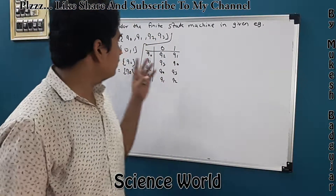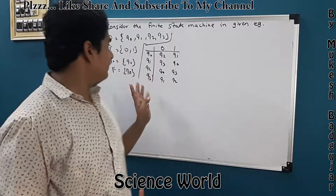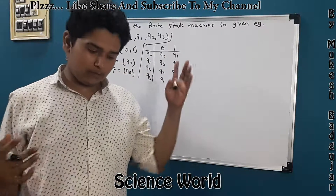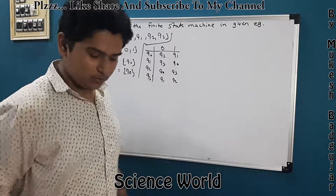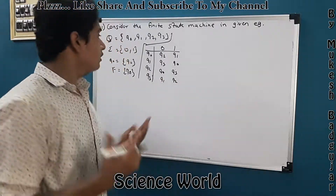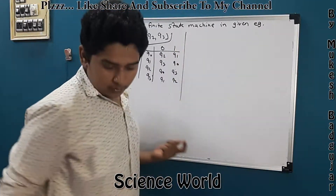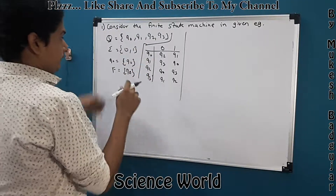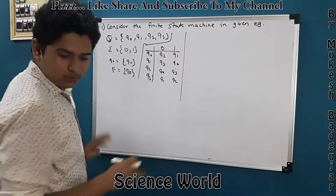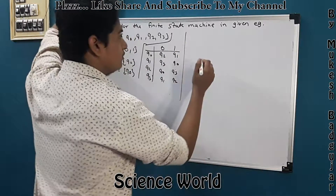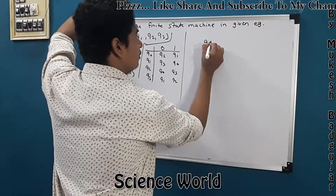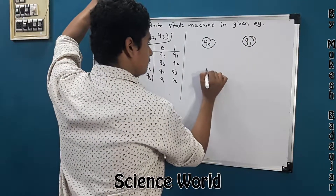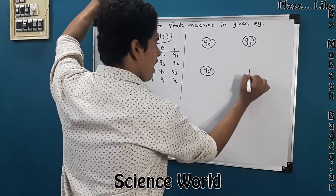Now we have to solve the example using the table, and from that we will find and draw our diagram. We have four states, so we directly define four states: Q0, Q1, Q2, and Q3.